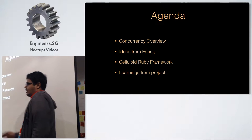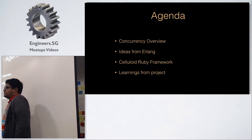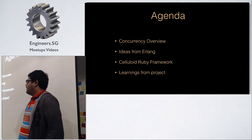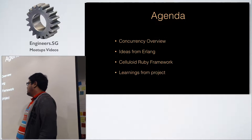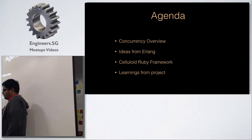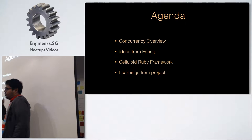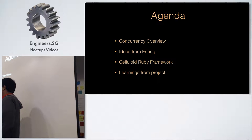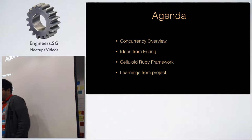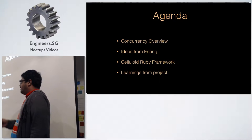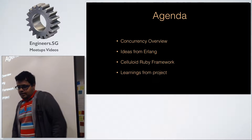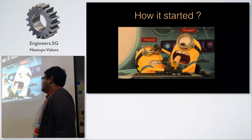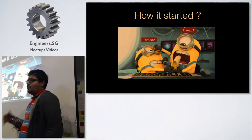The agenda for today is to give a brief overview of the current situation in concurrency, the different models available in the market, the ideas that influenced the Celluloid Ruby framework, some Celluloid code examples, how we've drawn some ideas from Erlang, and learnings from my project.